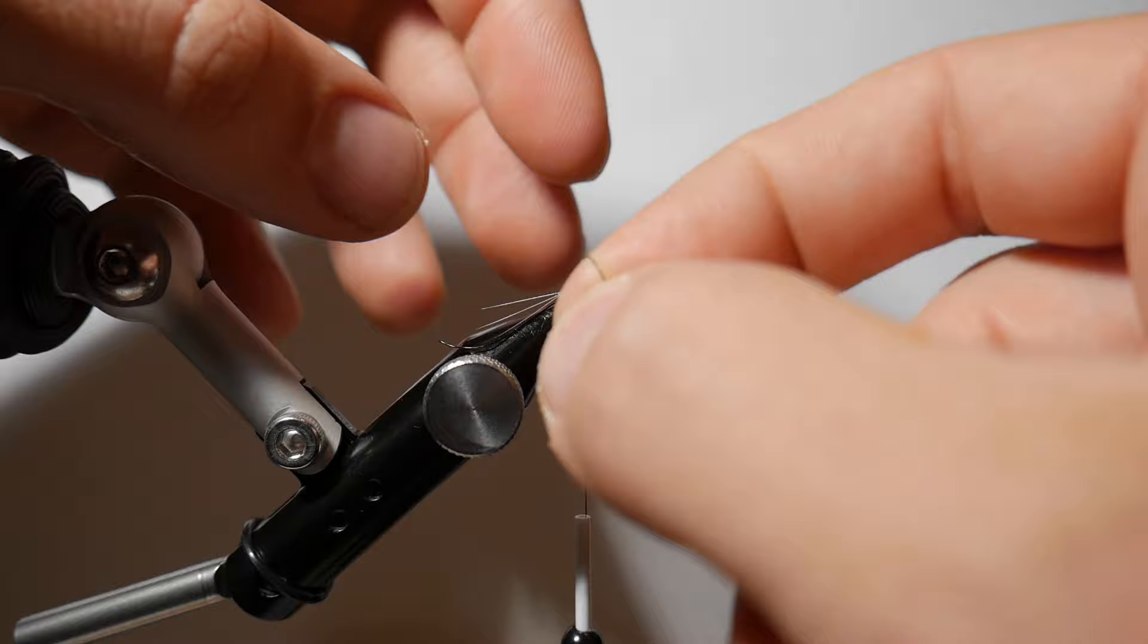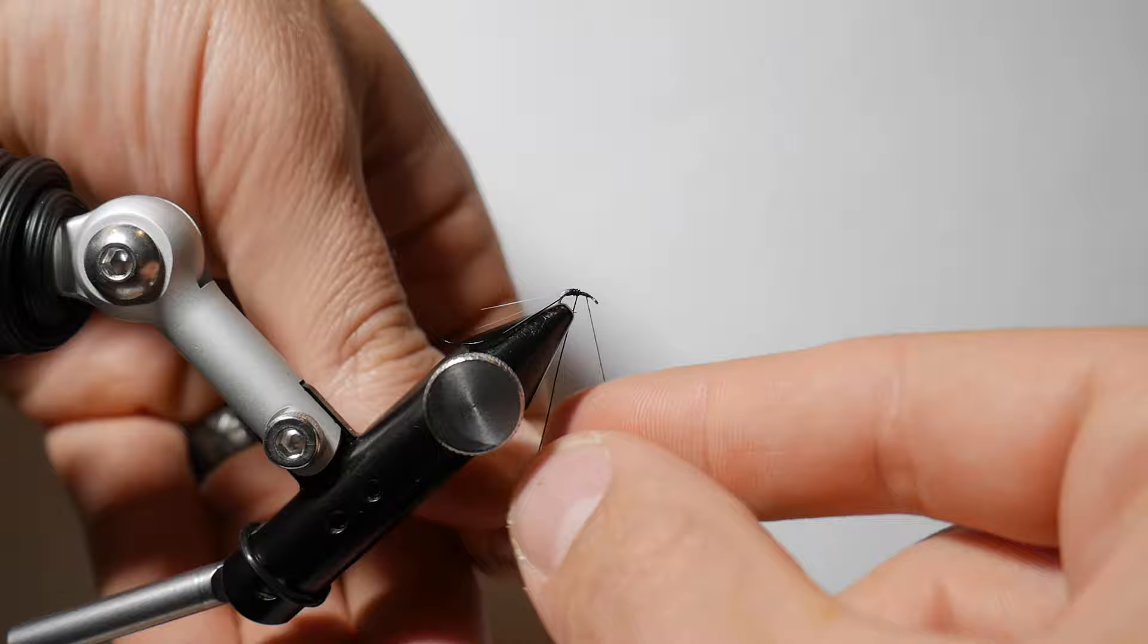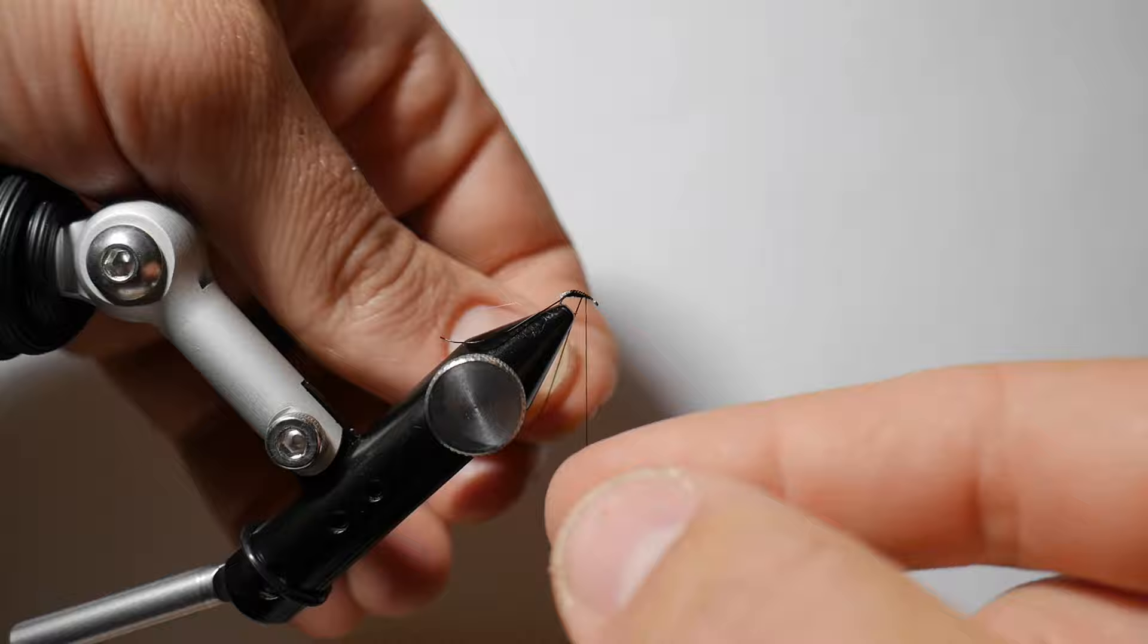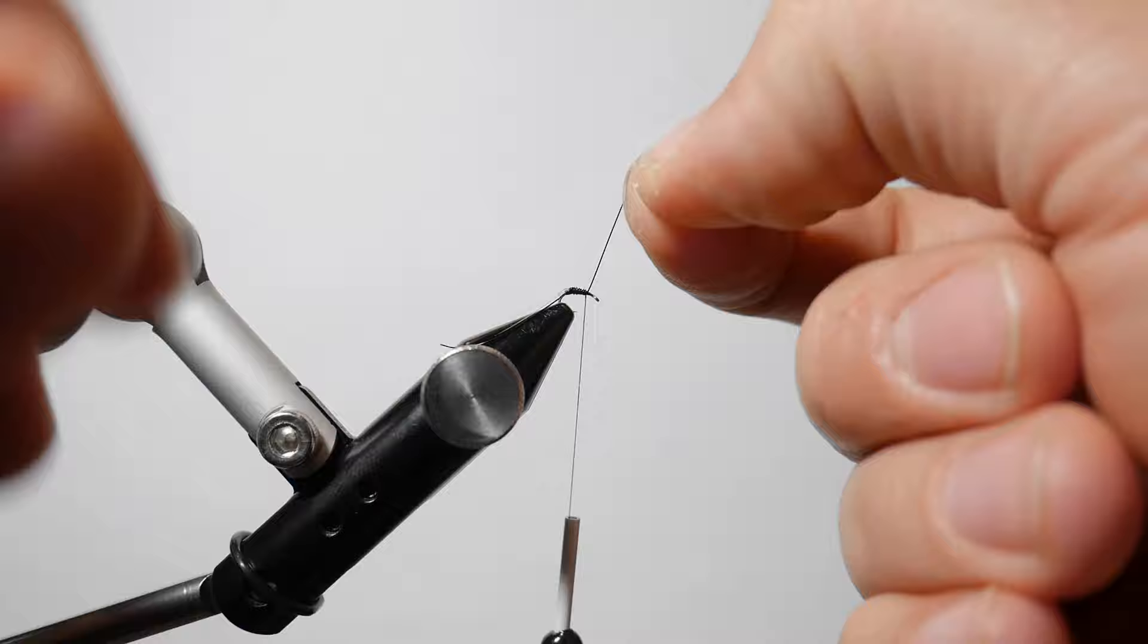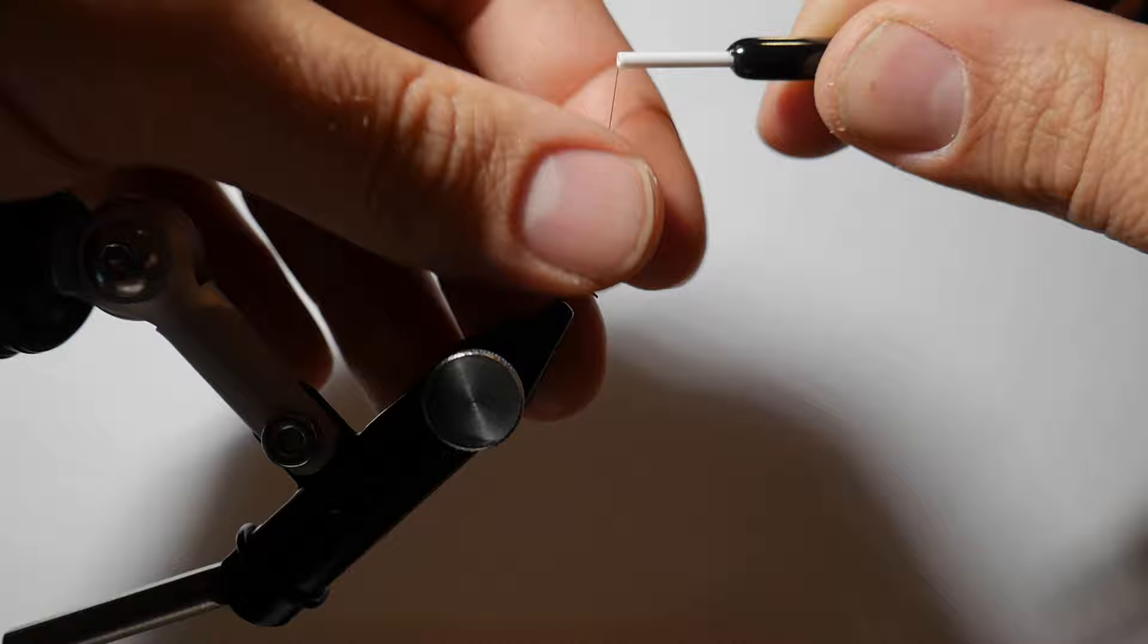So just like you would with a Copper John, I'm kind of keeping this wire nice and tight and trying to build wraps that are touching each other. This is not a midge, we are not trying to build segmentation, although it will kind of look like that. We are trying to give some weight to this fly and keep those very, very tight. Once we get it to the 80% mark, we're going to go ahead and do a couple capture wraps and get right behind that copper wire.